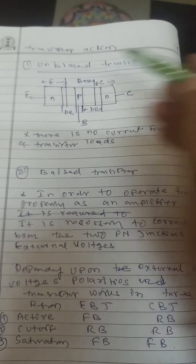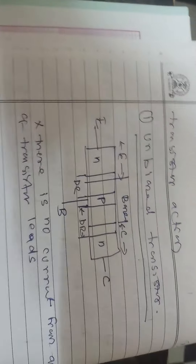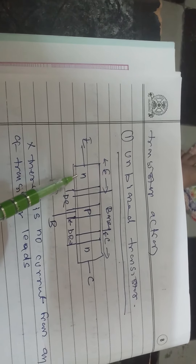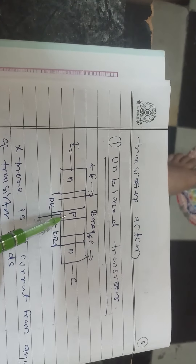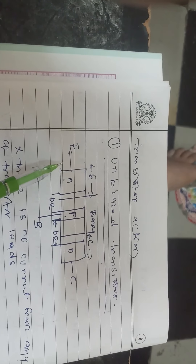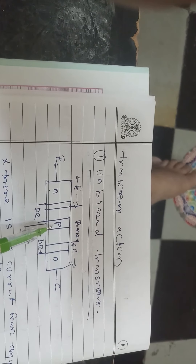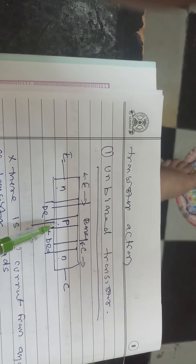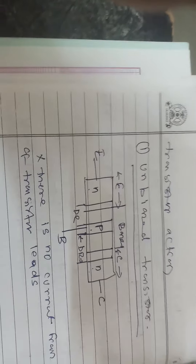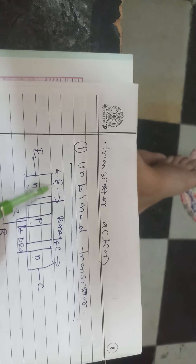Transistor action can be studied using an unbiased transistor and a biased transistor. In the figure shown, this is the unbiased transistor — unbiased means there is no external bias connected to the transistor. Here we have the N-type where electrons are majority charge carriers, the P-type which is the base, and the N-type which is the collector. The emitter is heavily doped compared to the collector.